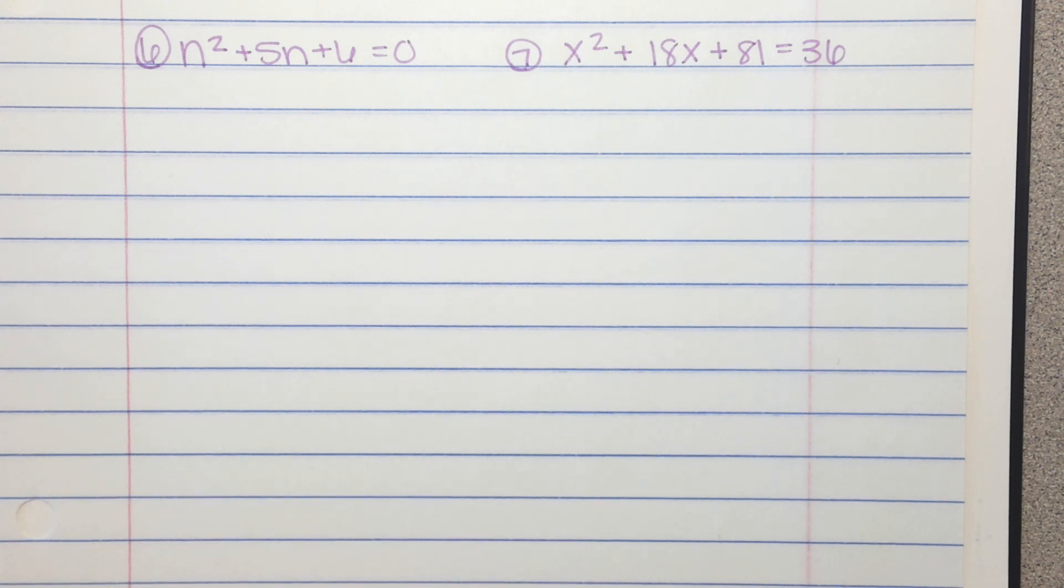Here are examples 6 and 7. I want you to take just a second, write these down, and give them a try. Factor them. Set those factors equal to 0 and solve.